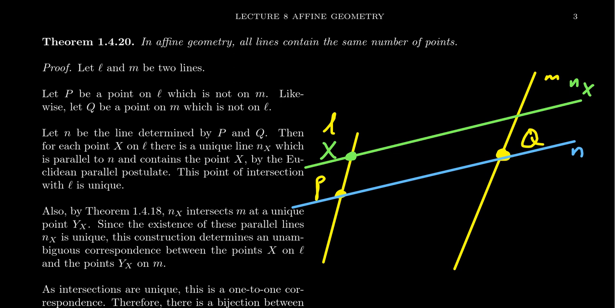The line n_X will intersect L, but that intersection is unique — the only point shared between n_X and L is going to be this point X. Now, my diagram seems to suggest that the line n_X should intersect M. But how do we know that?